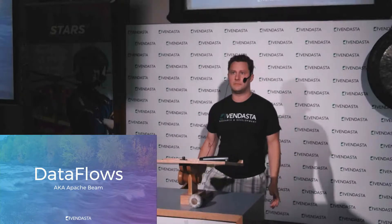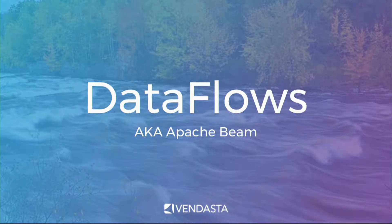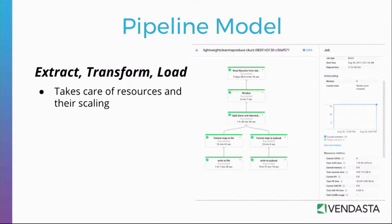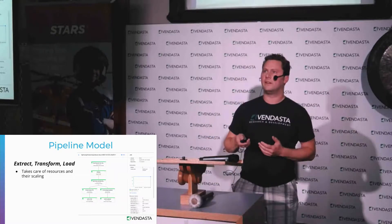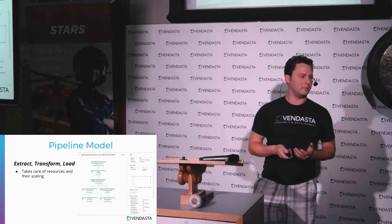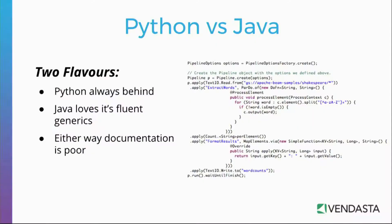So where have we gone now? Google put some time into what they call Dataflows, and now they've renamed it Apache Beam as they open sourced it to bring a wider audience. It's the pipeline model where you're extracting, transforming, and loading, but it takes care of a lot of the scaling for you. You can see an example of a dataflow — the job time is 11 hours, but the total CPU virtual time is 170 hours — so it's really scaled out for us. Dataflows come in two flavors: Python and Java.